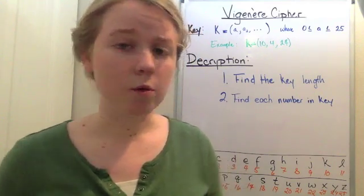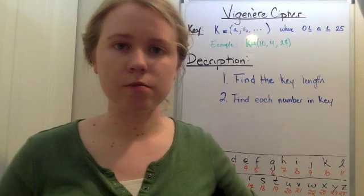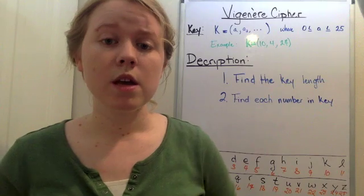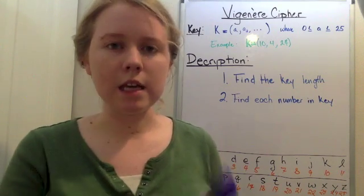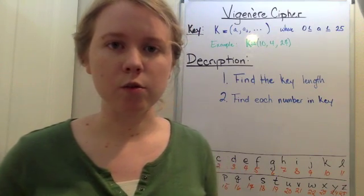There are two steps. One, find the key length. You have to know how long the key is, if the key is three numbers long or ten numbers long. Step two is you have to find each number in the key. Once you know how long it is, you have to figure out what the numbers are.